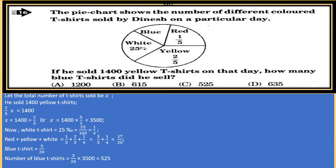We have to find the number of blue t-shirts he sold. 1400 yellow t-shirts are sold on that day. Let the total number of t-shirts sold be X. Yellow t-shirt is 2/5 part of the whole t-shirts he sold. So, 2/5 of X equals 1400. X equals 1400 divided by 2/5, or X = 1400 × 5/2 = 3500.